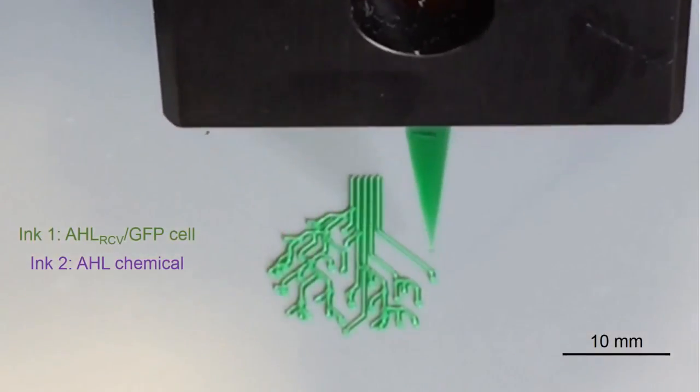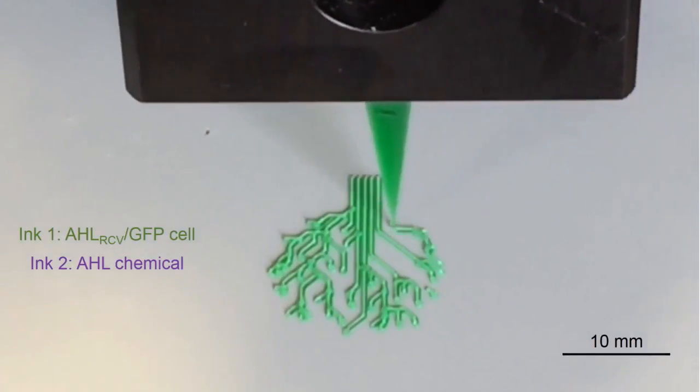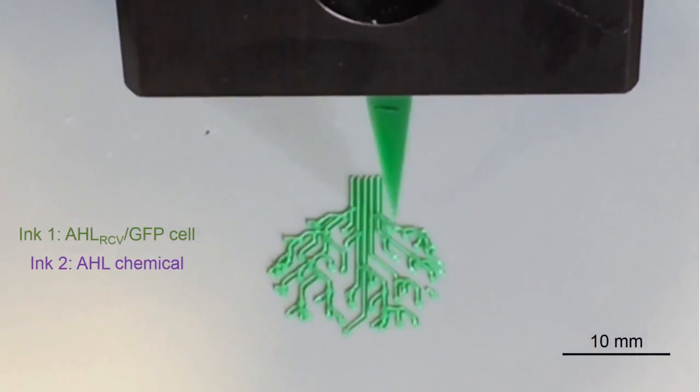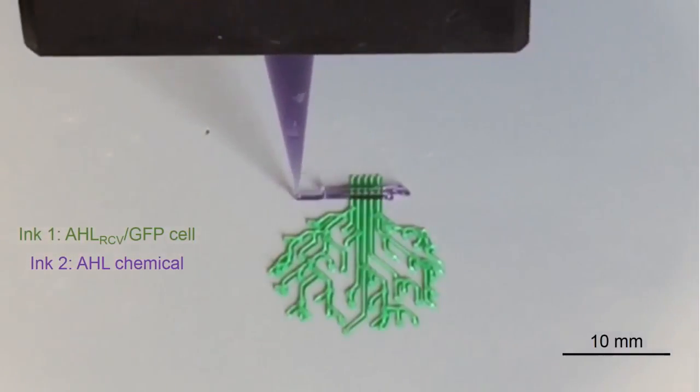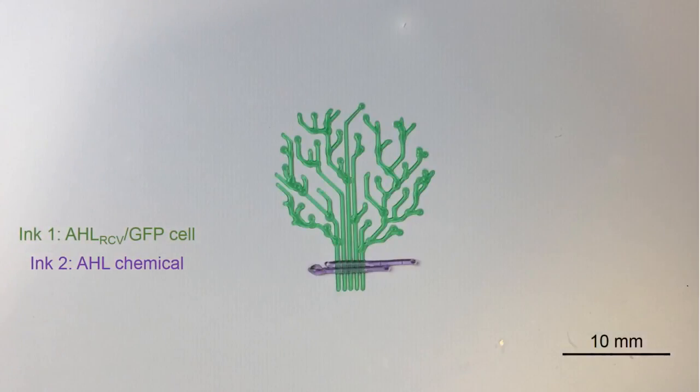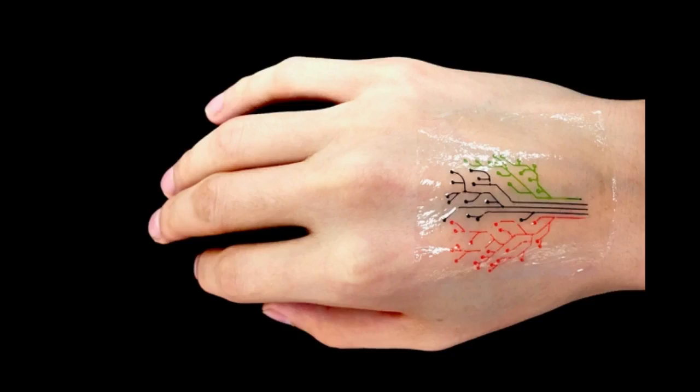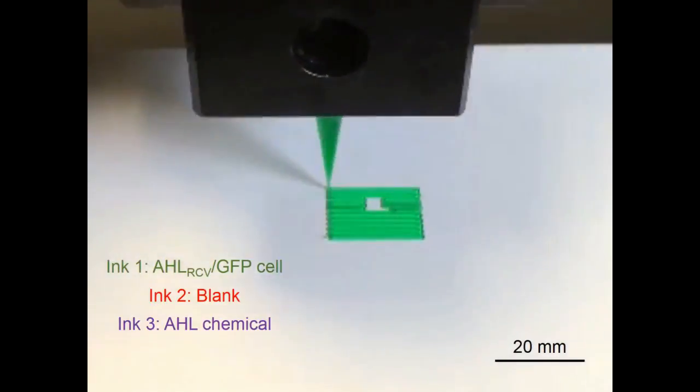Each branch of the tree is lined with cells sensitive to different chemical or molecular compounds. When the patch is adhered to skin that has been exposed to the same compounds, corresponding regions of the tree light up in response.